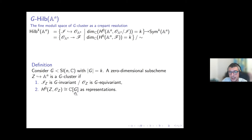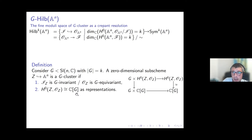The regular representation C[G] is a fixed representation, and this isomorphism means we have an isomorphism of vector spaces between the two representations of the group, inducing a commutative diagram where the horizontal arrows are the actions and the vertical arrow is identity times the isomorphism on the right.